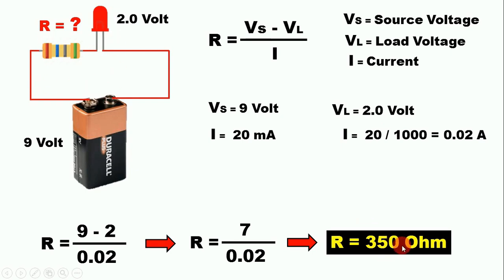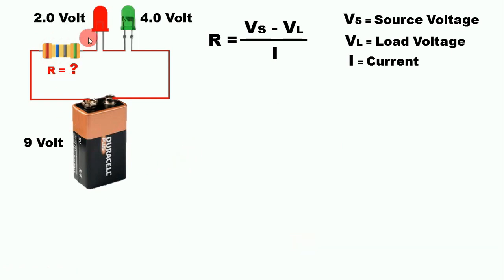Now let's see one more example. In a circuit, 2, 3, or even 4 LEDs may be used. The resistance value for this is also calculated using the same formula. Let's look carefully at how to do that calculation.